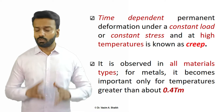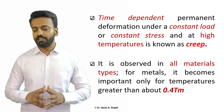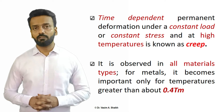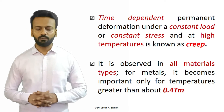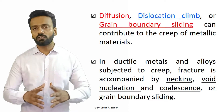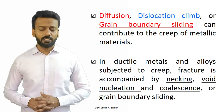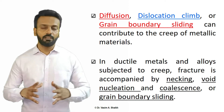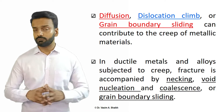Creep failure occurs because of the constant load or constant stress on any material which happens at an elevated temperature and it is also dependent on time. Creep is observed in almost all materials, but in metals it is significant at around 0.4 of the absolute melting temperature. Diffusion, dislocation climb, and grain boundary sliding all contribute to the mechanism of creep failure. Ductile materials and alloys subjected to creep failure mainly fail because of necking and the coalescence of voids, and sometimes they also fail because of grain boundary sliding.